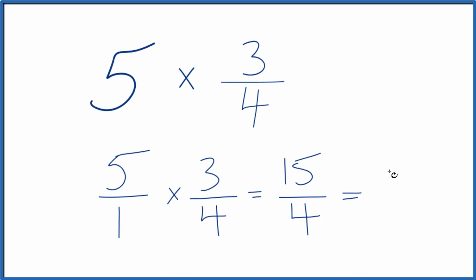4 goes into 15... 3 times 4 is 12 with 3 left over. Bring the 4 across there. So you could call 15 fourths 3 and 3 fourths. They have the same value.